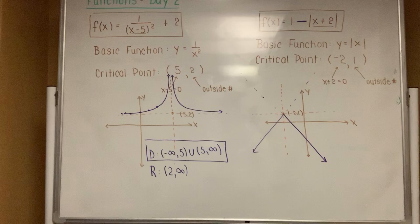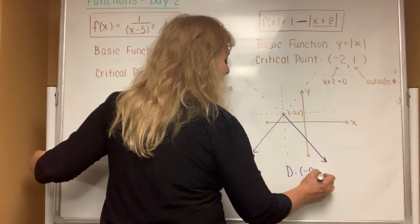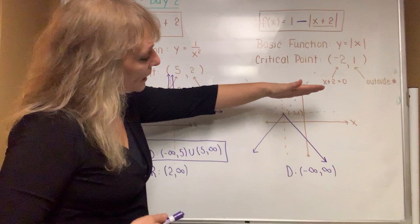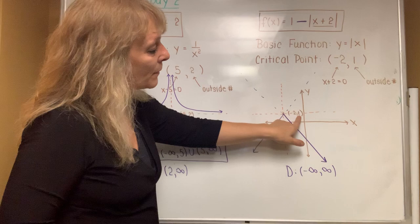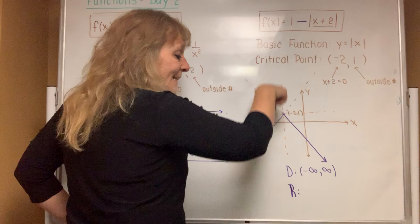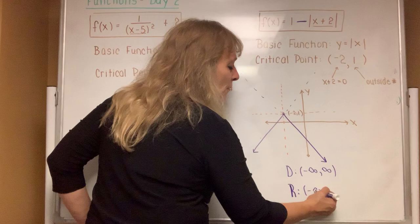Parabolas are U-shapes and absolute values are V-shapes. Both always have a domain of negative infinity to positive infinity because they spread out forever left to right. For the range, this upside-down V falls below the horizontal dotted line at a height of 1 unit. There is a point at one unit and it's completely below, so the range goes from negative infinity to positive 1, including positive 1 because there's a dot at that height.